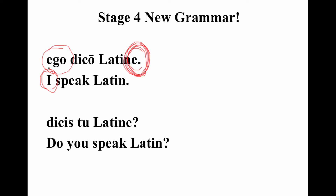So, ego means I. But look at this — 'dico.' The -O of 'dico' means 'I speak.' You wouldn't need ego at all. You could just say 'dico latine' — I speak Latin.